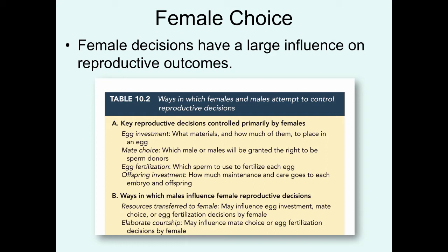Given these female options, males have various ways they can influence the female's reproductive decisions. The first thing that males can do is provide resources to females. They may do this to influence which eggs the female will invest in the most, basically to try to sway the female to mate with them, or to entice the female to utilize their sperm to fertilize her eggs. Males also try to influence mate choice and egg fertilization patterns through the display of elaborate traits and courtship displays.